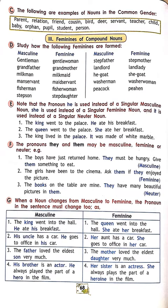The following are examples of nouns in the common gender: parent, relation, friend, cousin, bird, deer, servant, teacher, child, baby, orphan, pupil, student, person. If you say 'parent' it could be male or female. 'Friend' could be a male friend or a female friend. 'Servant' could be a male servant or a female servant.